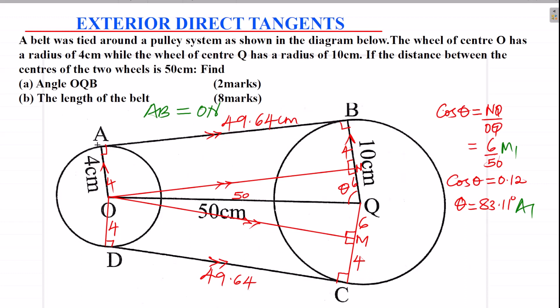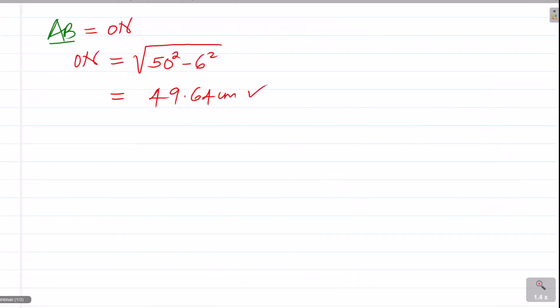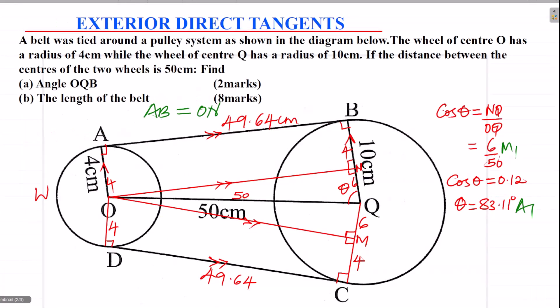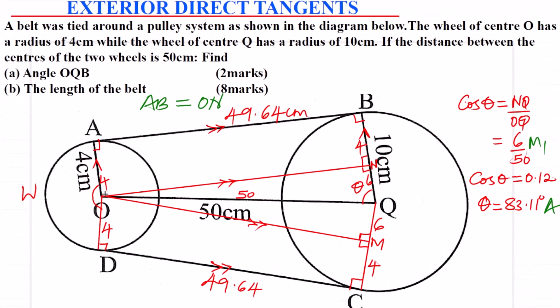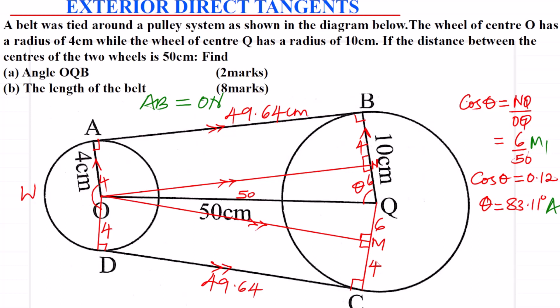Now let's get the length of arc AWD. To get the length of that arc, we shall need the angle subtended at the center by that arc. To get that angle, I will first get the angle on the other side, as that will help me get the whole angle. Let me start by getting angle AOQ. There are other small angles here that we need to get, and I'm going to indicate them. We need the whole of that angle, and we also need these two equal angles — I'll call them alpha.